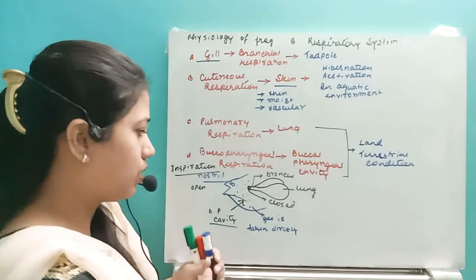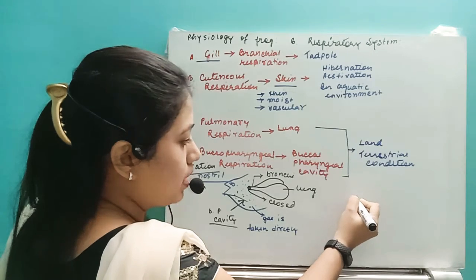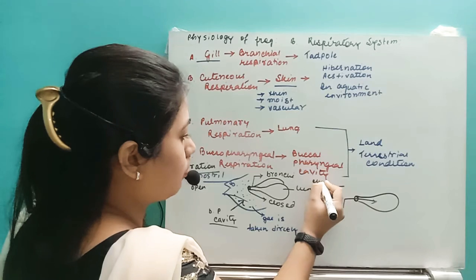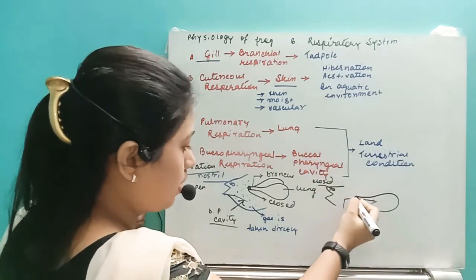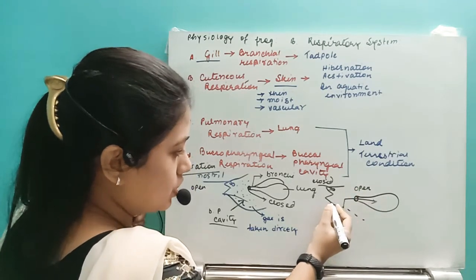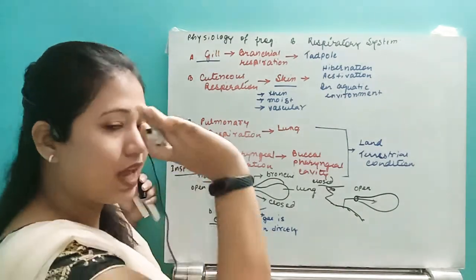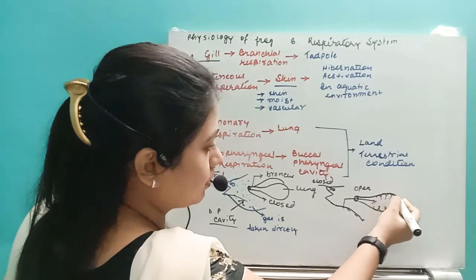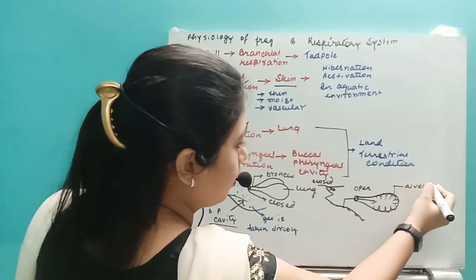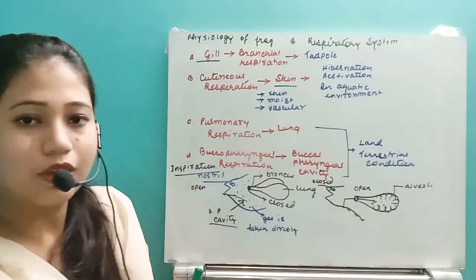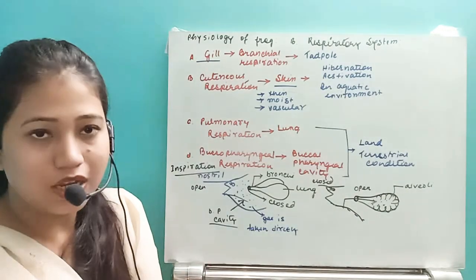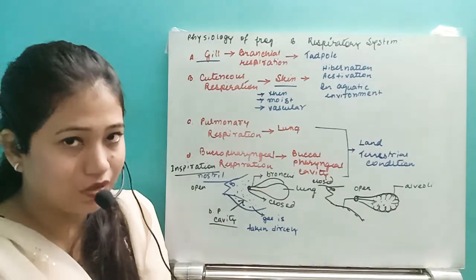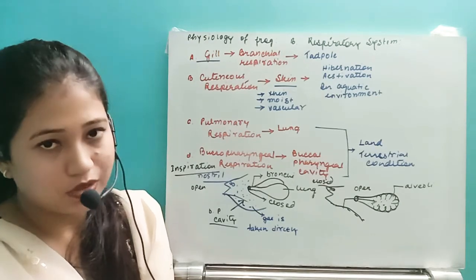During expiration, the bronchi opening opens while the nostril closes. The buccopharyngeal region elevates, forcing gas into the bronchi, which leads to the lungs. The lungs contain small sac-like structures called alveoli, which take up the gas — this is pulmonary respiration. Then the gas is expelled outside as the nostril opens again.